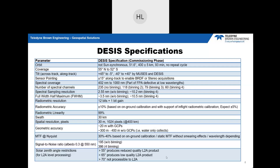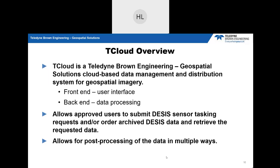T-Cloud is our cloud-based data management and distribution system for geospatial imagery, specifically DSIS data. On the front end, you have the user interface to perform archive orders or tasking of the sensor. On the back end is the processing and data delivery to users. It allows users to look at what's in the archive, submit specific orders for tiles, or task the sensor for new data. We can also process and post-process in multiple ways.